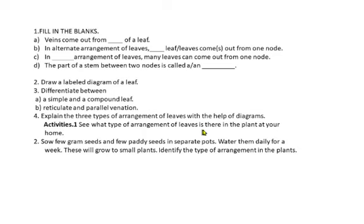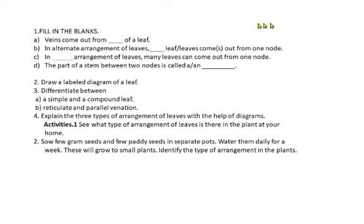For activities: activity one — you will see what type of arrangement of leaves is there in the plants at your home. Activity two — sow a few gram seeds and a few paddy seeds in separate pots, water them daily for a week. After a week you will see they have grown into small plants, and then you will identify the type of arrangement in the plants you have grown.